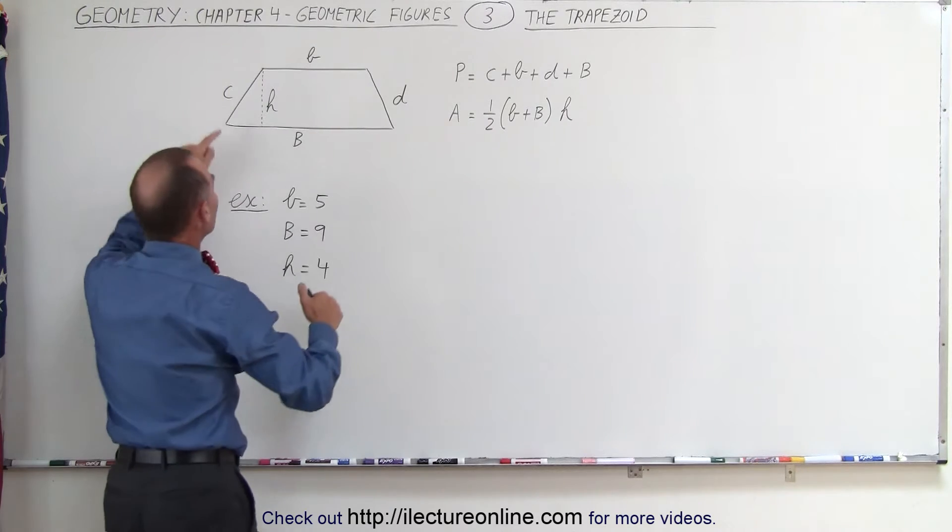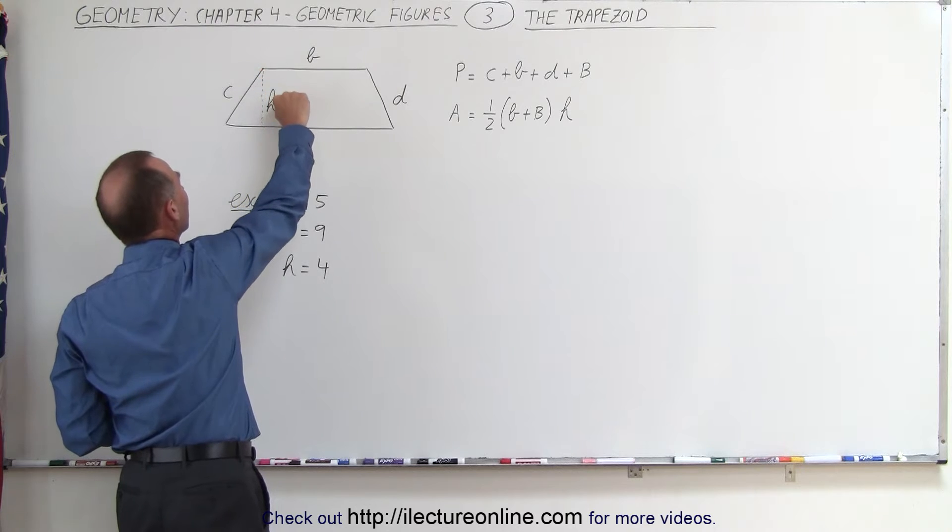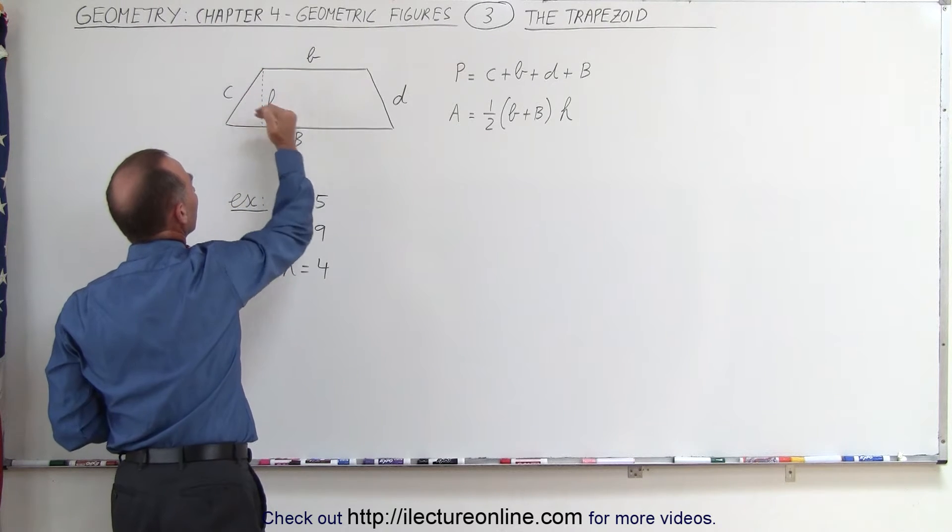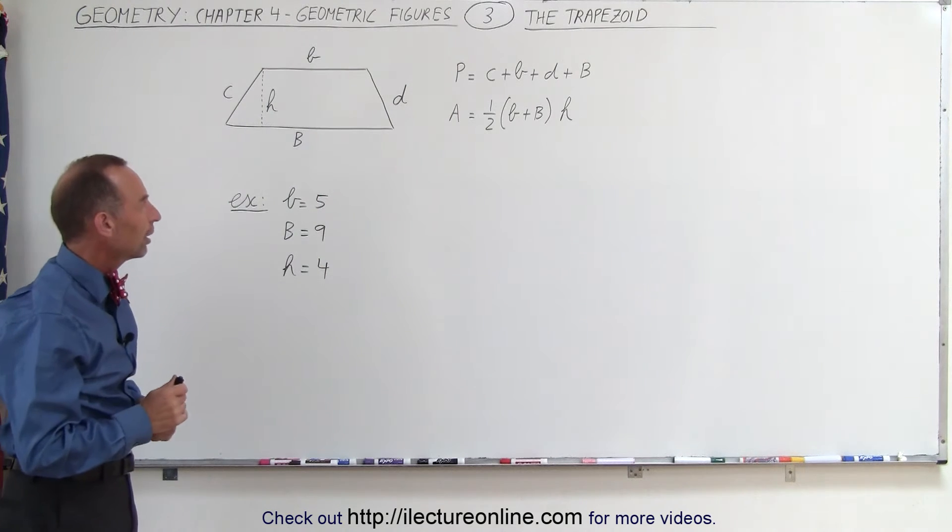The other two sides are labeled c and d, and then we have the height, labeled h, which is the perpendicular distance between the two sides that are parallel to one another.